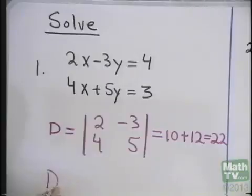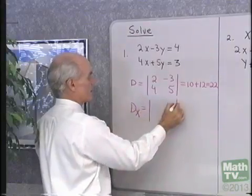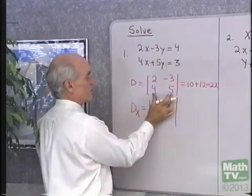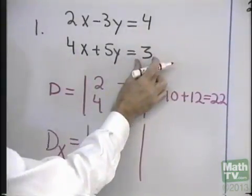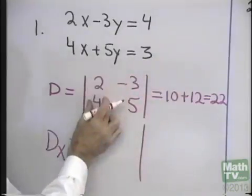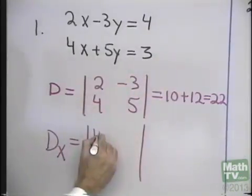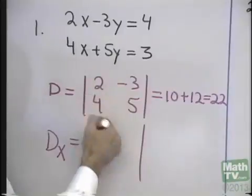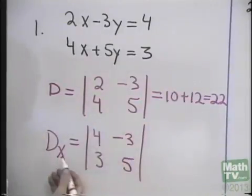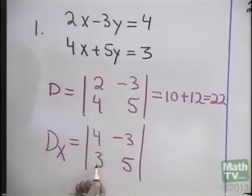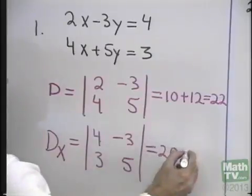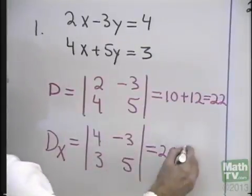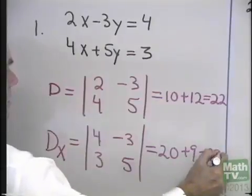The next determinant I form is called D sub x, and it's the same as determinant D, except where the coefficients of x were, we replace those with the constant terms. So instead of the coefficients of x, I write the constant terms. D sub x means I've substituted the constant terms for the coefficients of x. I evaluate this: 4 times 5 is 20, subtract 3 times negative 3, which is negative 9. So 20 plus 9 equals 29.